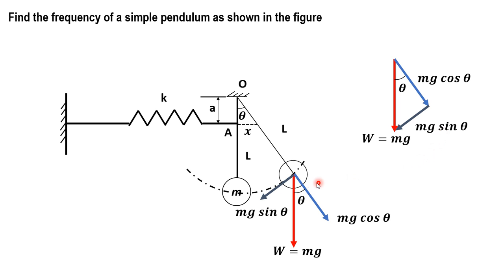Out of these two components, mg sinθ will be the restoring torque that will cause the bob or mass to come back to its equilibrium position. Apart from this, there will also be a spring force which will contribute a restoring torque.